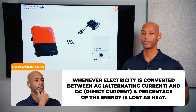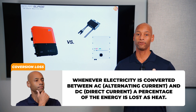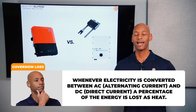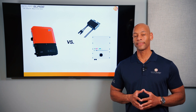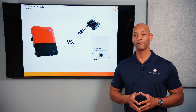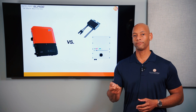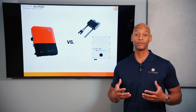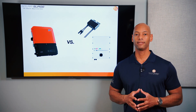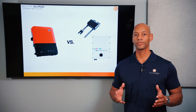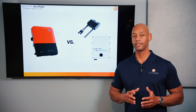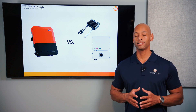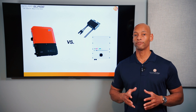Every time you convert electricity — whether you're stepping the voltage up, stepping it down, converting DC to AC, or AC to DC — you lose a little bit of the energy, and a lot of it is lost as heat. If you go grab one of your DC chargers for your laptop or cell phone and hold it, you'll feel warmth coming off that device — that is energy being lost as heat in the conversion process. The same thing happens with solar, so you want to avoid those conversions wherever possible.